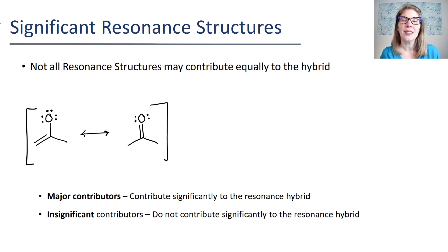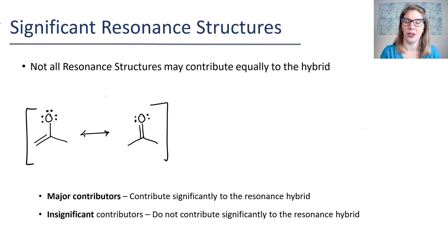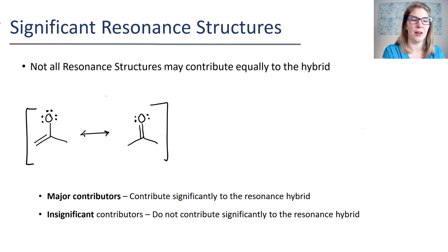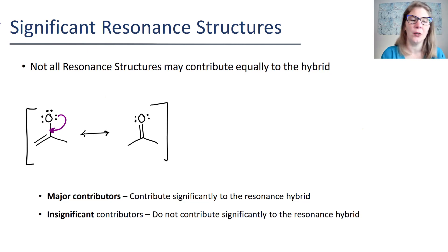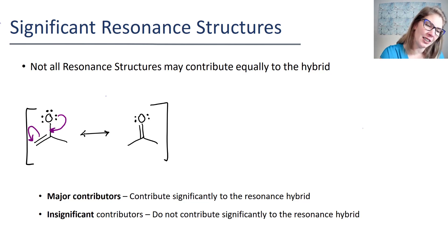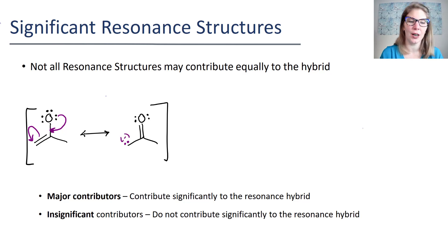The resonance hybrid was the melding of the resonance structures that we had drawn. So for example, in this particular set of resonance structures, which I have to complete, what will happen is a lone pair will come around, form a pi bond, and then the electron pair will end up on this exterior carbon.